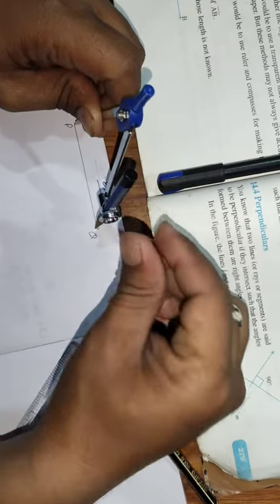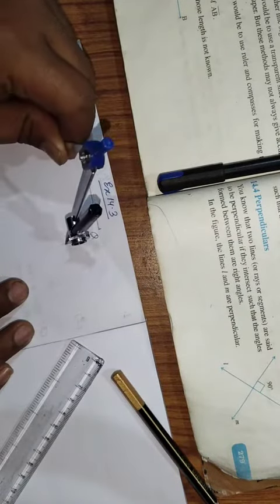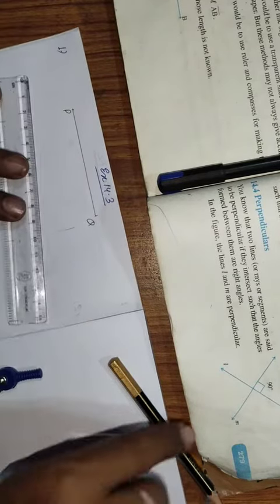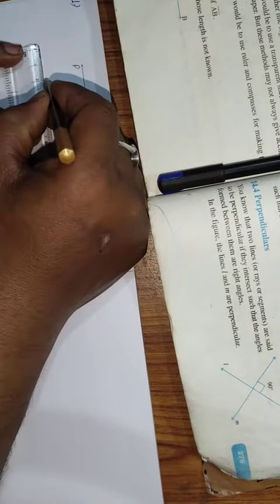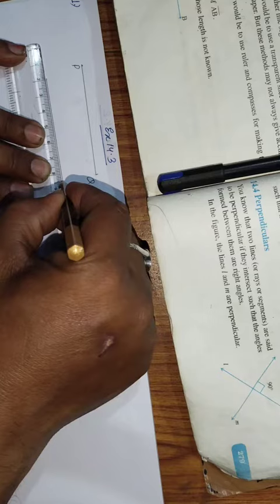Take the length, exact length. Now put this like this and copy the length on this. Copy. Now, you may join this line. This is the copy of PQ.